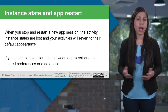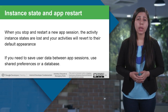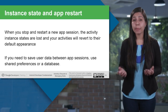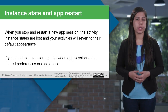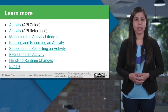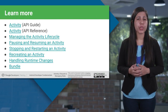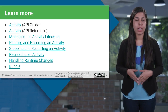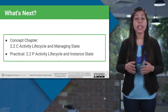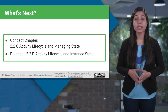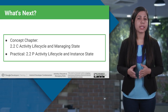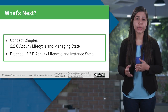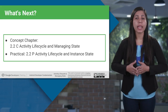When you stop and restart a new app session, the activity instance state is lost and your activities will revert to their default appearance. If you need to save user data between app sessions, use shared preferences or a database. Be sure to check out the reference links about activity, activity lifecycle, and bundle. Our next practical will help you practice the activity lifecycle — when activities start, stop, pause, and are destroyed — and how to retain activity state across lifecycle events.